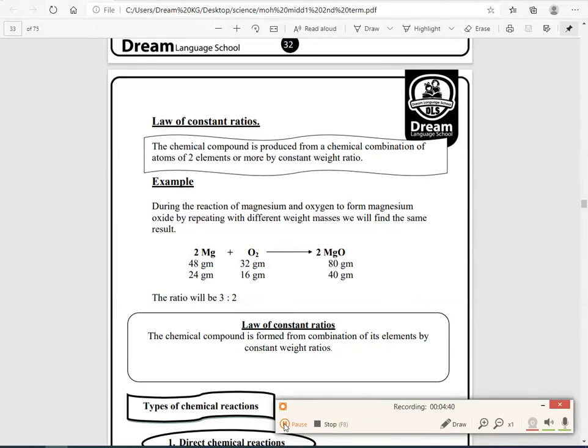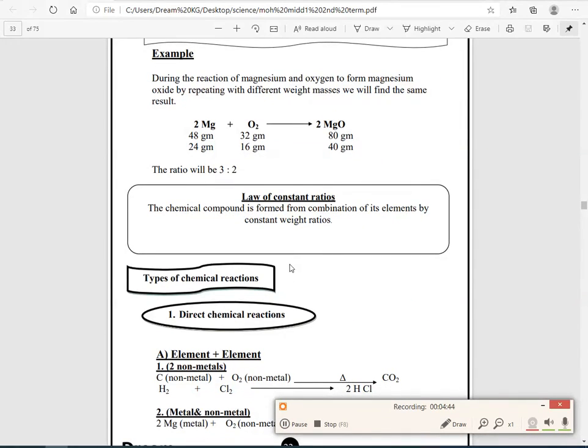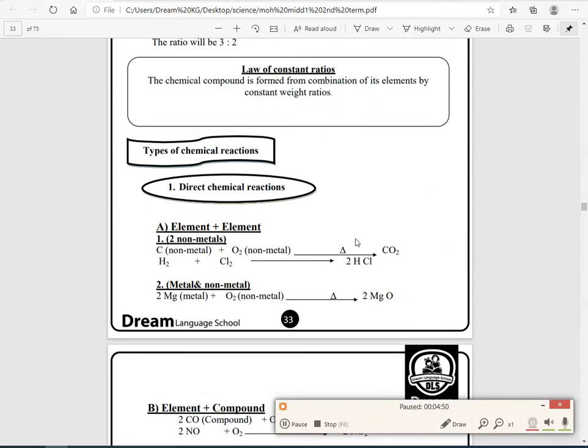And this is the law of constant ratio, that the chemical compound is formed from combination of its elements by constant weight ratios.